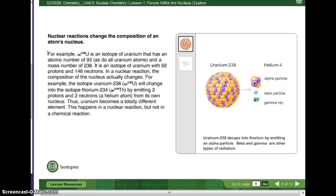In a nuclear reaction, the composition of the nucleus actually changes. For example, the isotope uranium-238 will change into the isotope thorium-234 by emitting two protons and two neutrons, or in other words, a helium atom, from its own nucleus.